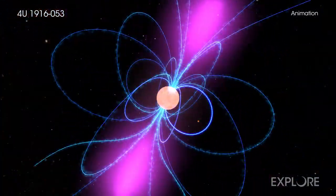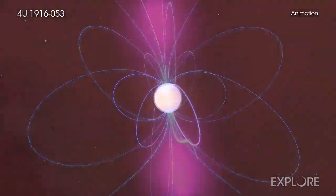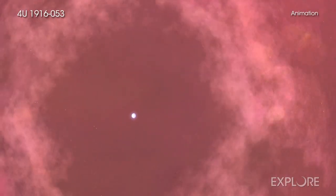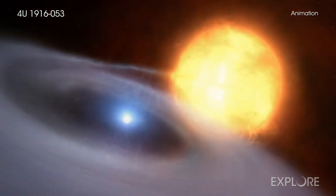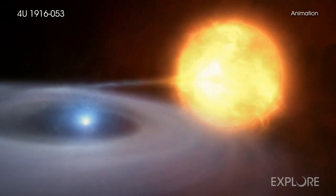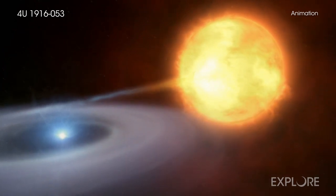The other is a neutron star, an even denser object created when a massive star collapses in a supernova explosion. These two compact stars are only about 215,000 miles apart, roughly the distance between the Earth and the Moon.